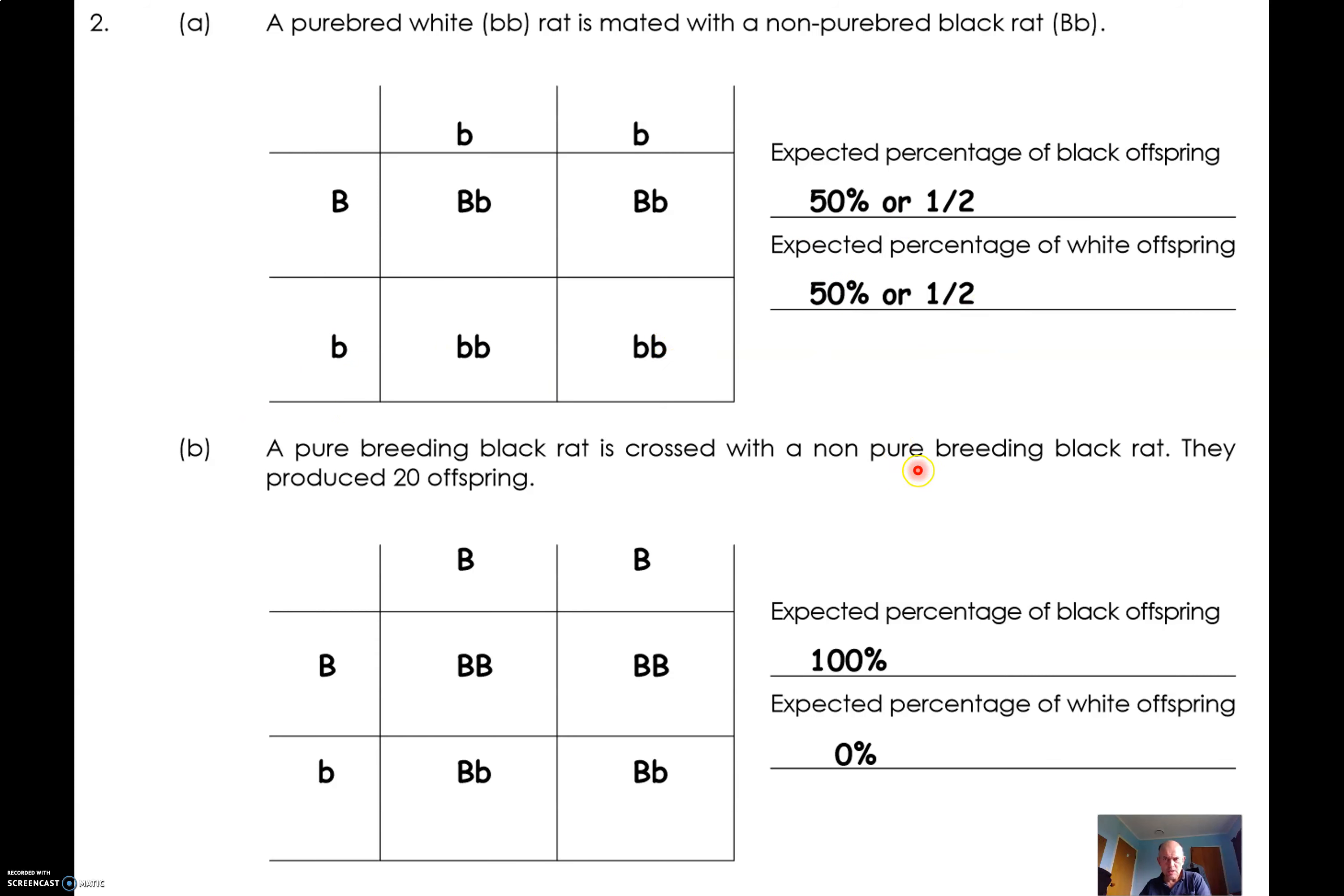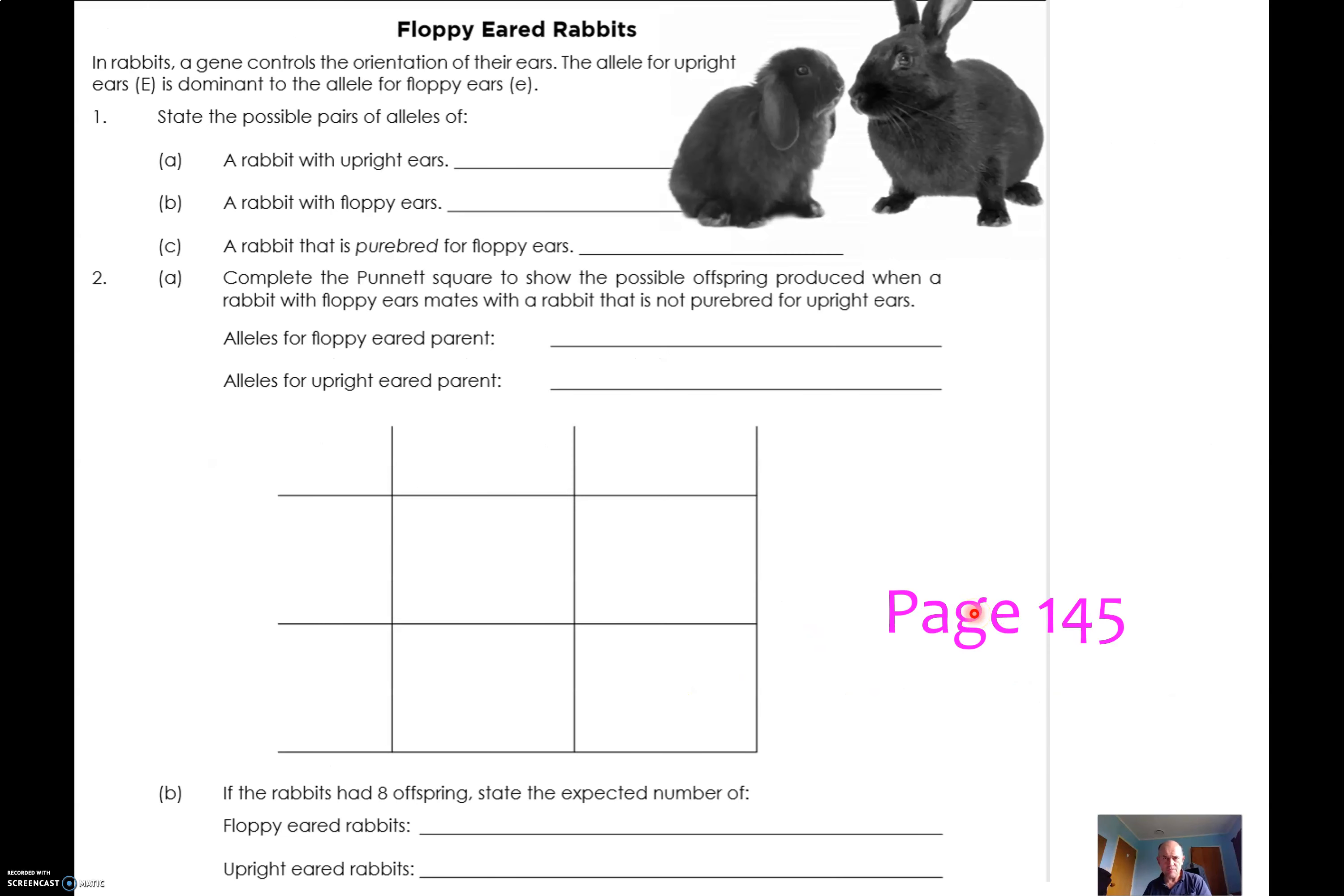Now a non-pure breeding black rat, this is one here which has got the recessive information hidden in it, mates with a purebred black rat which has only got the dominant. And so therefore we've got two chances out of four of homozygous dominant, two chances out of four heterozygous. All of those chances will produce a black rat, so we expect 100%. That's really useful.